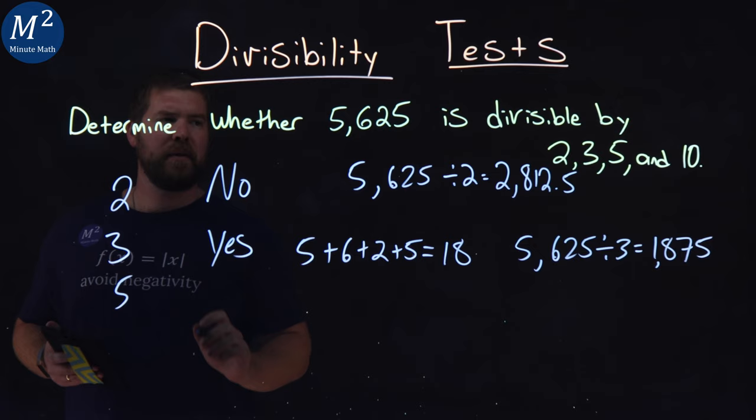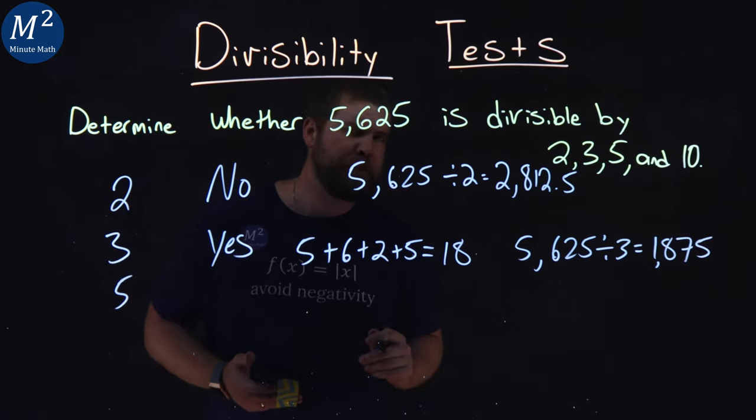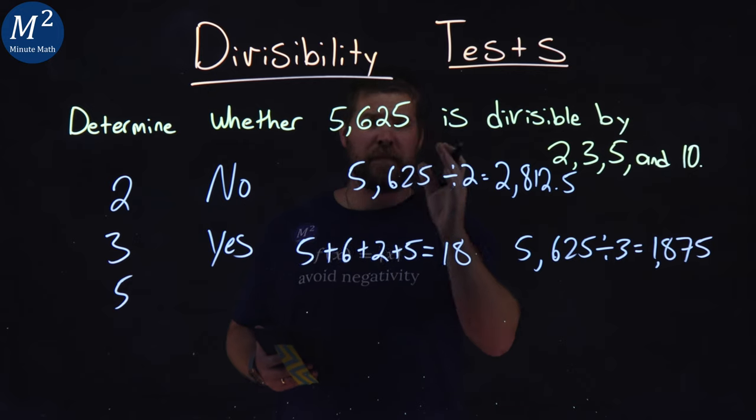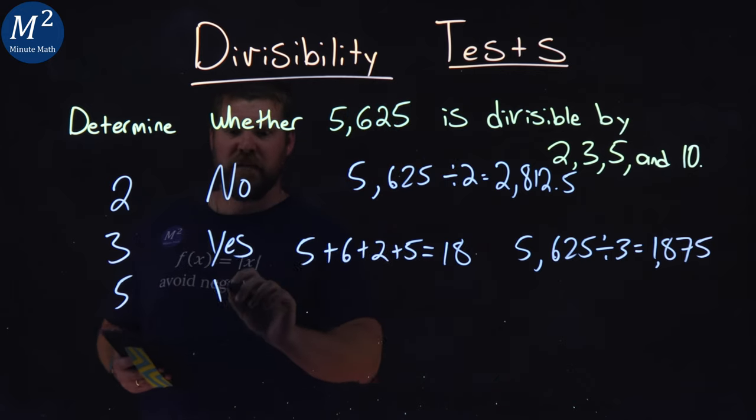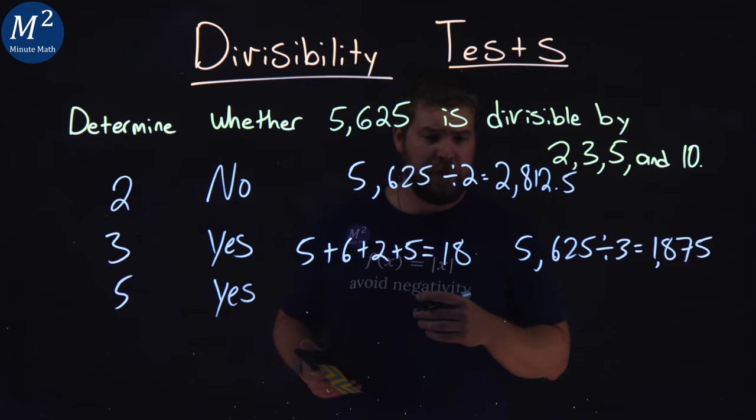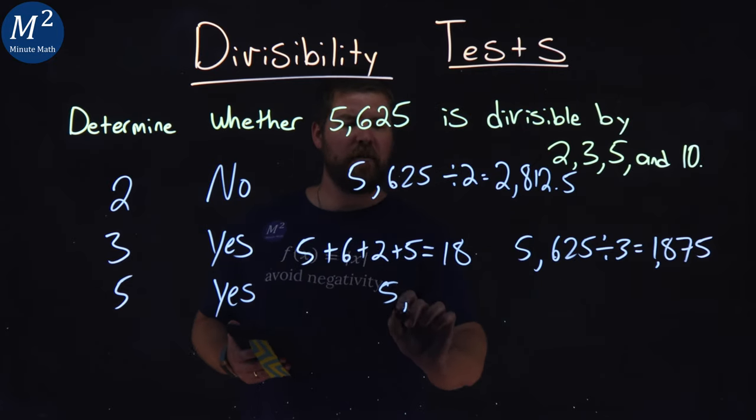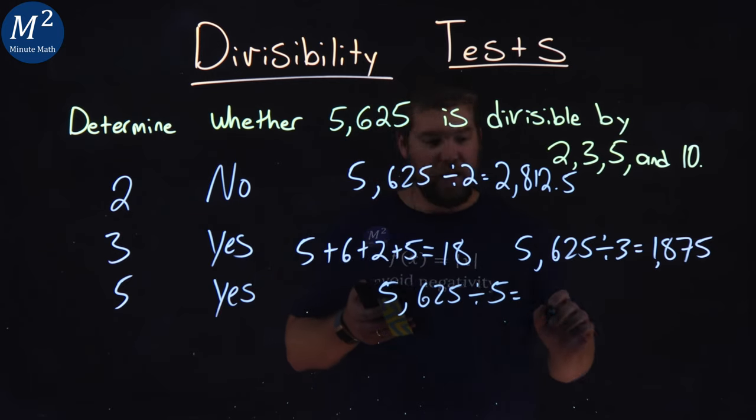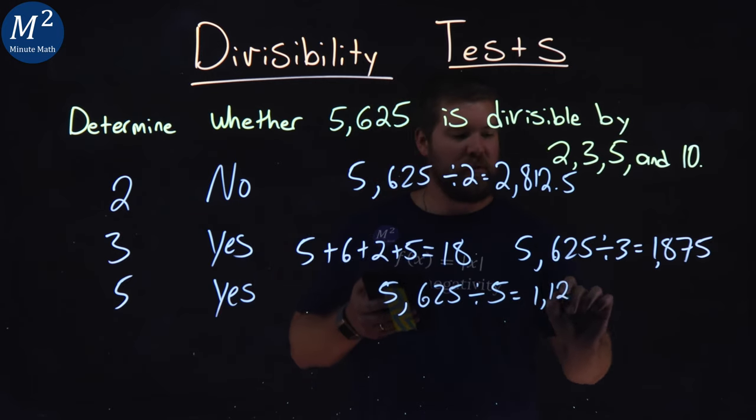What about 5? We'll look at the last digit. Is it a 0 or a 5? It's a 5. So if that's the case, then yes. Pretty easy test. It ends in a 5, divisible by 5. And so 5,625 divided by 5 comes out to be 1,125.